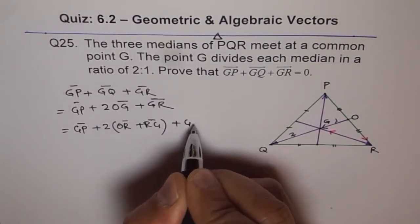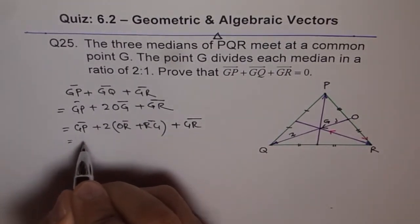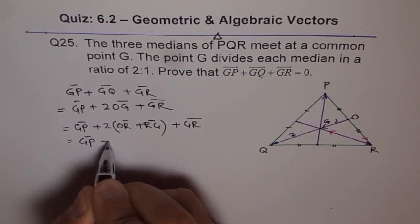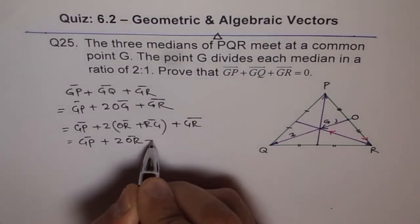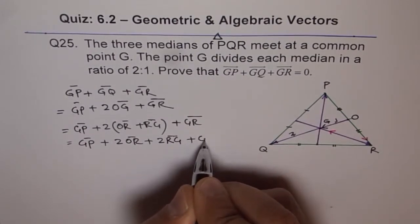And we are maintaining others. Now let's open the bracket. So we have GP plus 2 times OR plus 2 times RG plus GR.